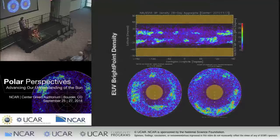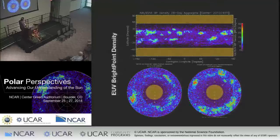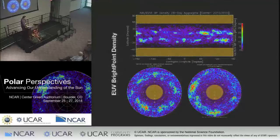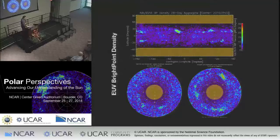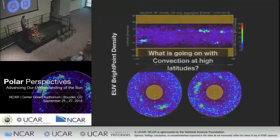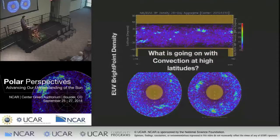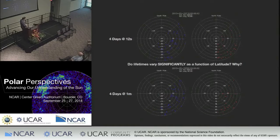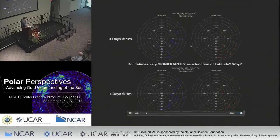Polar regions — it seems like 55 degrees is approximately a barrier. What's going on with convection at high latitudes? You can play another tool — this is image analysis every 12 seconds, and at the bottom it's a minute. The idea here is that, like we saw yesterday, we can start to characterize at least the appearance of these structures at high latitudes, because there's no foreshortening effect.